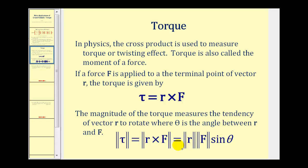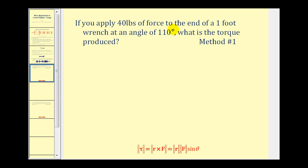We're going to take a look at one problem and solve it using two methods — one using the cross product formula, and a second using the magnitude formula. If you apply forty pounds of force at the end of a one foot wrench at an angle of one hundred ten degrees, what is the torque produced? We want to find the magnitude of the torque, and for this first method we're going to find the magnitude of R crossed with F.